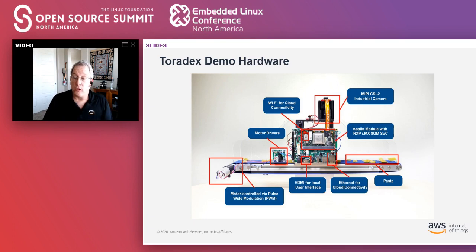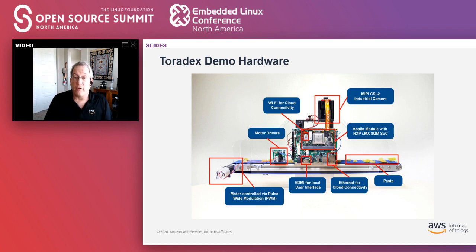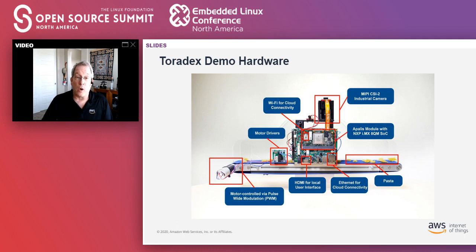I'm going to transition into a demo. Before jumping over to the YouTube video, I want to lay out the hardware perspective. One of our partners, Toradex, put together a demo called 'pasta inference.' What you see is a conveyor belt at the bottom, with all the compute capabilities at the center. On the right-hand side, we place pieces of pasta of different shapes onto the conveyor belt, our central edge device drives the conveyor belt forward at a particular speed, and as the pasta comes underneath the camera, it does object detection to determine what type of pasta it is and the confidence levels.